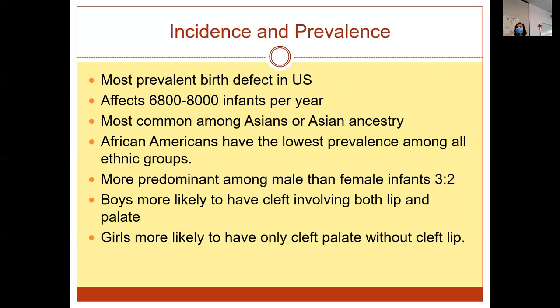It's the most prevalent birth defect in the US, affecting somewhere around 6,800 to 8,000 infants per year. It's most common in Asian or Asian ancestry populations and least common in the African-American population. It's more predominant for males to have it. But if a female is going to express a cleft, oftentimes it's just occurring with the lip and not as severe a case.